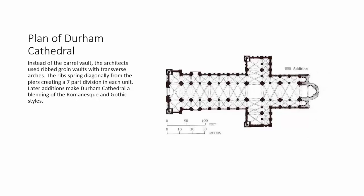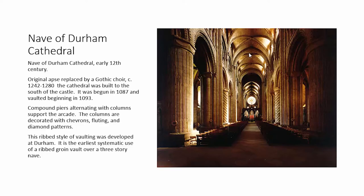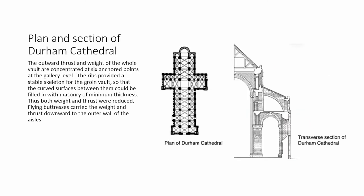Here's the plan. We no longer have barrel vaults as in earlier Romanesque churches — now we have ribbed groin vaults with transverse arches. Along the nave you can see: arch, groin vault, arch, groin vault — like a stepping stone. The ribs spring diagonally from the piers, giving a seven-part division in each unit. When the later Gothic additions come, it truly becomes a blending of Romanesque and Gothic styles. After we look at Gothic art, you'll be able to see this even more clearly.